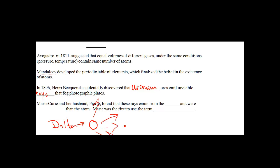So he came up with this idea, and then Marie Curie and her husband Pierre found that these rays came from the atom and were smaller than the atom. Marie was the first to use the term radioactivity.